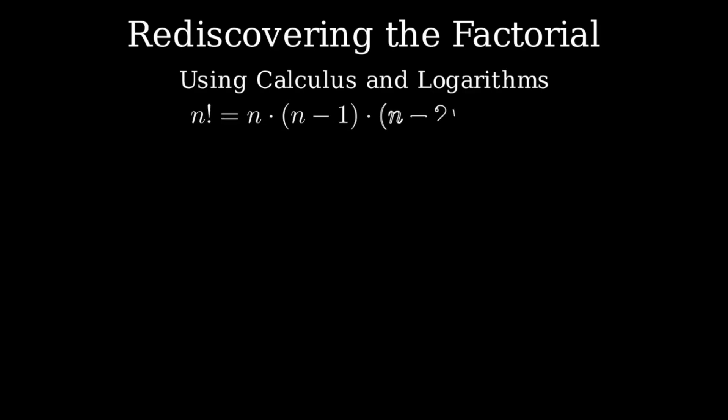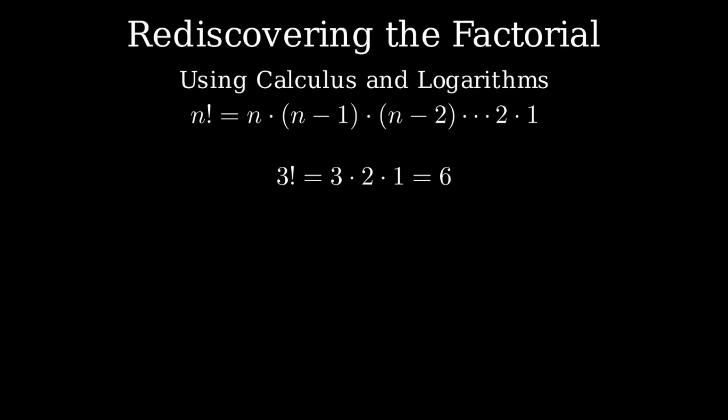For any positive integer n, the factorial n is simply the product of all positive integers from 1 up to n. For instance, 3 factorial equals 3 times 2 times 1, which is 6. And 5 factorial equals 5 times 4 times 3 times 2 times 1, which is 120.